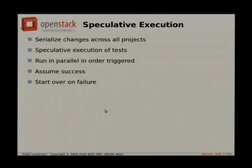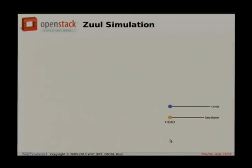Basically what Zuul does is it builds up a queue in memory of all of the changes that need to be merged. That queue is a serial data structure. It starts testing all of the changes in that queue in parallel with the assumption that they're all going to succeed and merge. If that's what happens, then you can merge as many changes as you can test in parallel simultaneously. I have a little visualization here to help explain it. We've got two projects: Nova and Keystone. The dots represent the commits on the head of the repository — like the subway map in GitK.